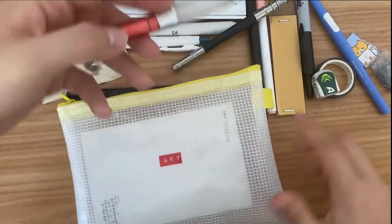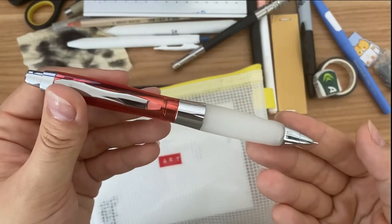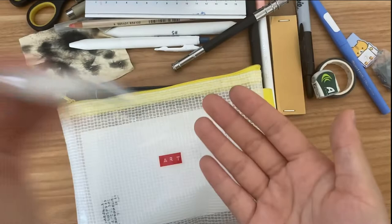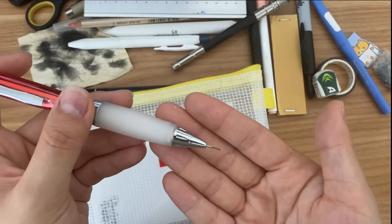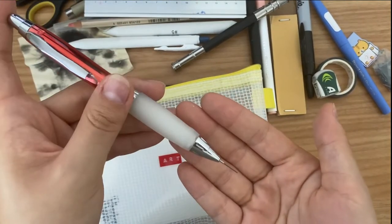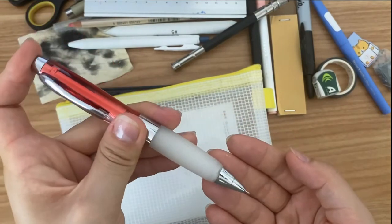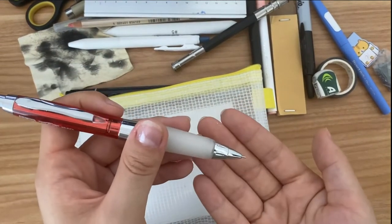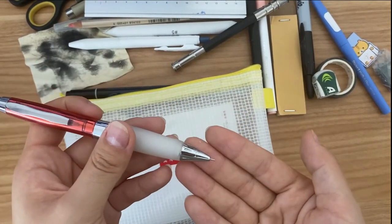And then I have my Uni Alpha Gel Shaker pencil where when you shake it it produces lead, and then when you click on it and put the lead back on and you shake it again it'll stop. It's very ergonomic and just really comfy, one of my favorite pencils.